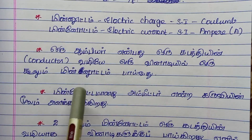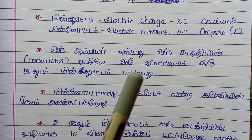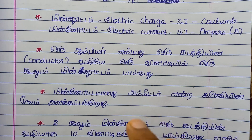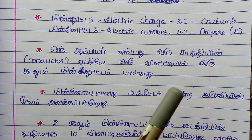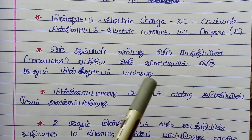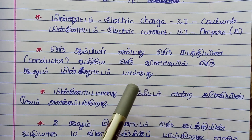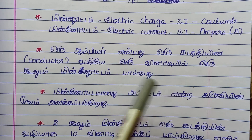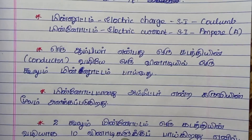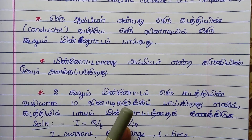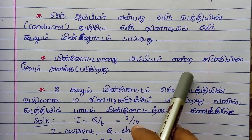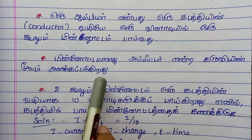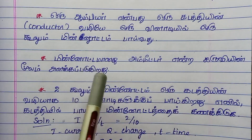One Ampere means one Coulomb of charge transferred per second through a conductor. If you have a charge flowing for one second, it will be one Ampere. We use an Ammeter device to measure the electric current.